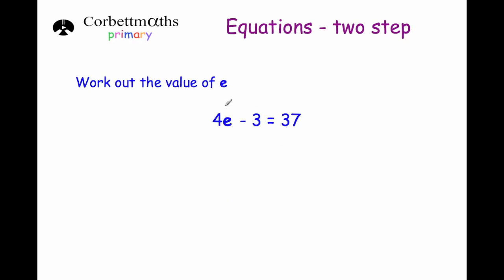Our next example says work out the value of e, and the question says 4e minus 3 equals 37. We want to get e on its own, so we want to get rid of the times by 4 and the take away 3. The inverse of minus 3 is to add 3, so we add 3 to both sides. The minus 3 goes and we're left with 4e; on the right hand side 37 plus 3 is 40.